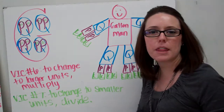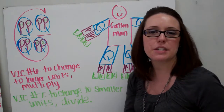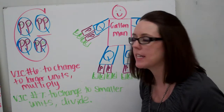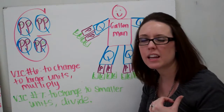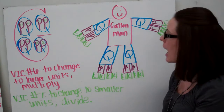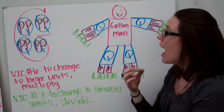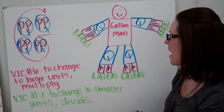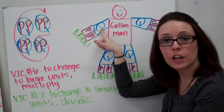You know I'm not the best artist, but just imagine. This is called the gallon man, and the gallon man is used to help you remember those units of capacity that are hard to commit to memory. So you can draw this to help you remember. This is one gallon — there are four quarts in a gallon. How many pints are in a quart? There are two pints in every quart.